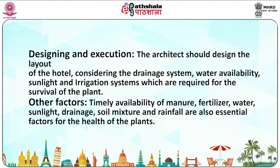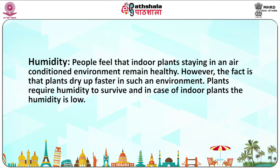The architect should design the layout of the hotel considering the drainage system, water availability, sunlight and irrigation system which are required for the survival of the plants. Other important factors for effective horticulture include timely availability of manure, fertilizer, water, sunlight, drainage, soil mixture and rainfall. These are essential factors for the health of the plant. Lastly, an essential element for effective horticulture is humidity. People feel that indoor plants staying in an air-conditioned environment remain healthy. However, the fact is that plants dry up faster in such an environment. Plants require humidity to survive, and in the case of indoor plants, humidity is often low.